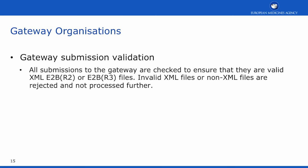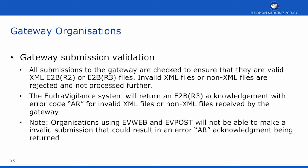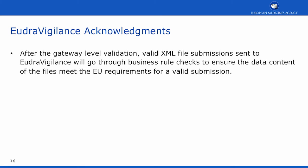All submissions to the gateway are checked to ensure that they are valid XML E2B R2 or E2B R3 files. Invalid XML files or non-XML files are rejected and not processed any further. The EudraVigilance system will return an E2B R3 acknowledgement with error code AR for these invalid or non-XML files received by the gateway, including E2B R2 files. Organisations should note that using EVWEB and EVPOST, they will not be able to make an invalid submission that could result in an error AR acknowledgement being returned.